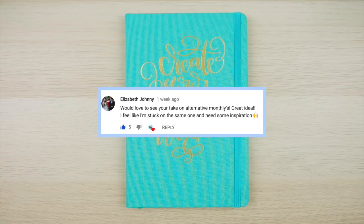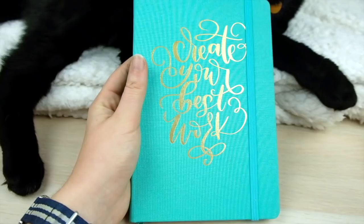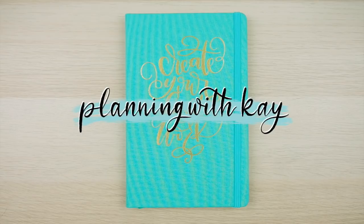I'm going to be setting these monthly spreads up in this gold foiled Tombow Dotted notebook and I'm actually going to be giving this away over on my Instagram next week along with a bunch of other fun planner supplies. So be sure to follow my Instagram at planning with Kay so that you know when that giveaway goes live.